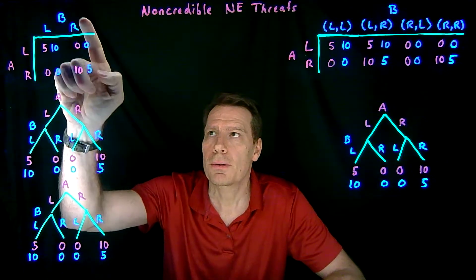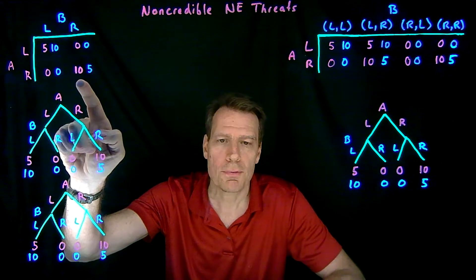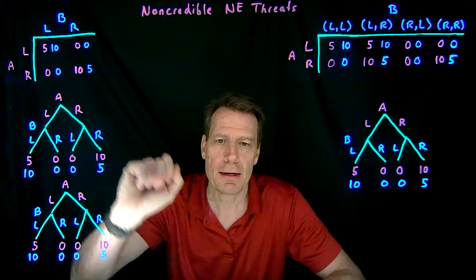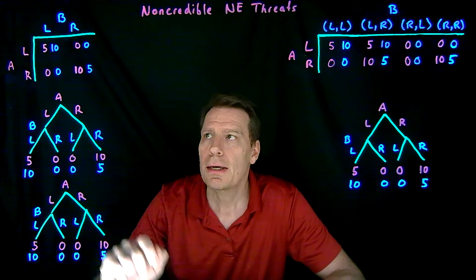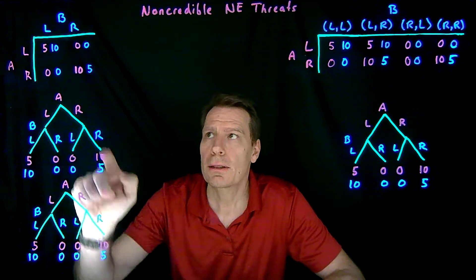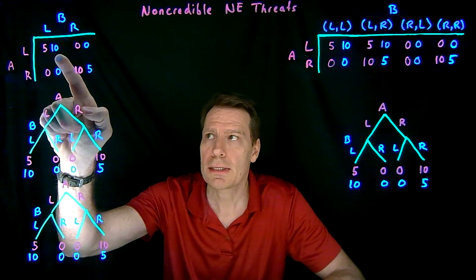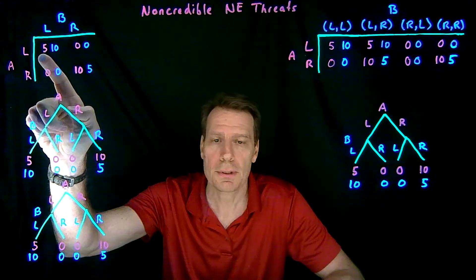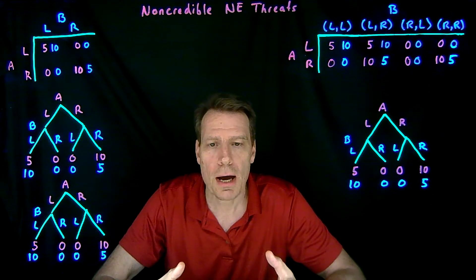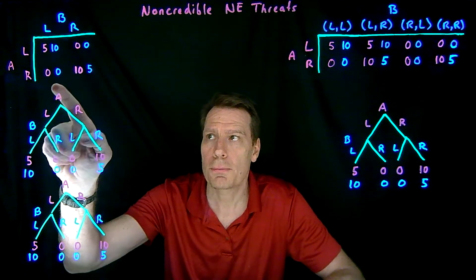If they both end up on the right side of the road, the American gets his most preferred outcome — he gets 10 and the British player gets 5. If they both drive on the left, the British player gets her most preferred outcome — she gets 10 and the American gets 5. If they choose opposite sides of the road, they crash and both get 0.